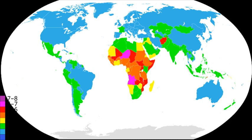Seeing population control as a matter of power and ethnic survival, rather than in terms of ecological sustainability, Tibetans successfully argued for an exemption of Tibetan people from the usual family planning policies in China, such as the one-child policy.